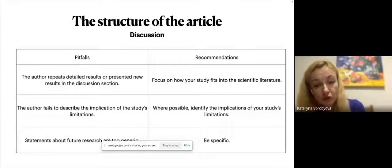So the author fails to describe the implication of the study's limitation. So where possible, identify the implication of your study's limitation. No matter how well conducted and thoughtful, all studies have limitations. So describe how the limitations affect the application of the findings. And statements about future research are too generic. So be specific. Explain in details what should be done in the future research.